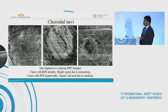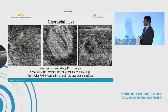There are a few papers trying to understand the OCTA characteristics of choroidal nevi. Some say they are dark and some say they are bright. We assume it probably depends on the overlying RPE changes.